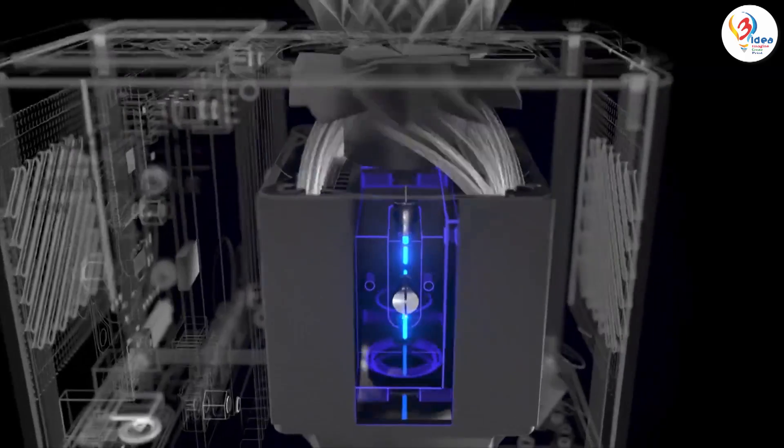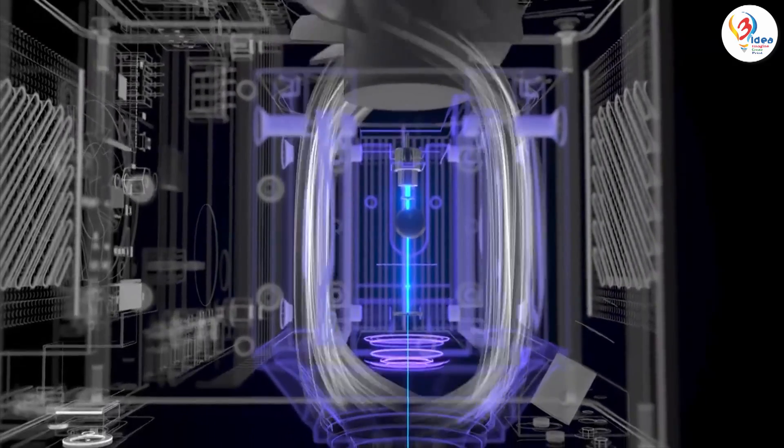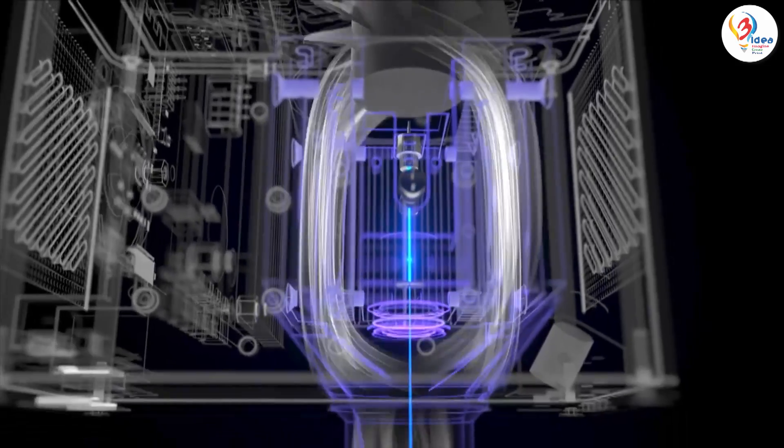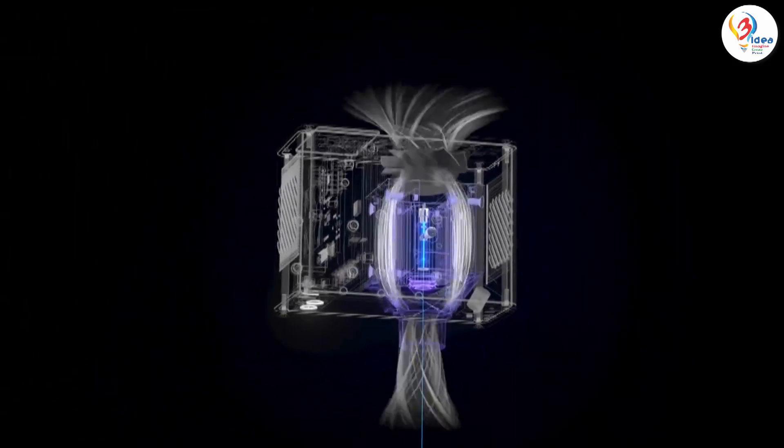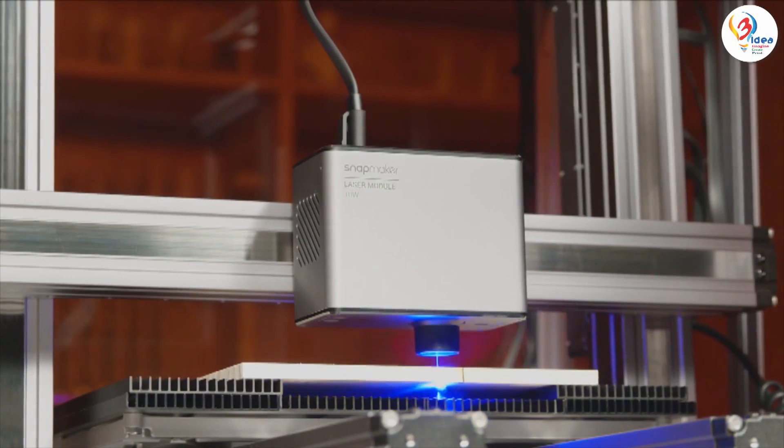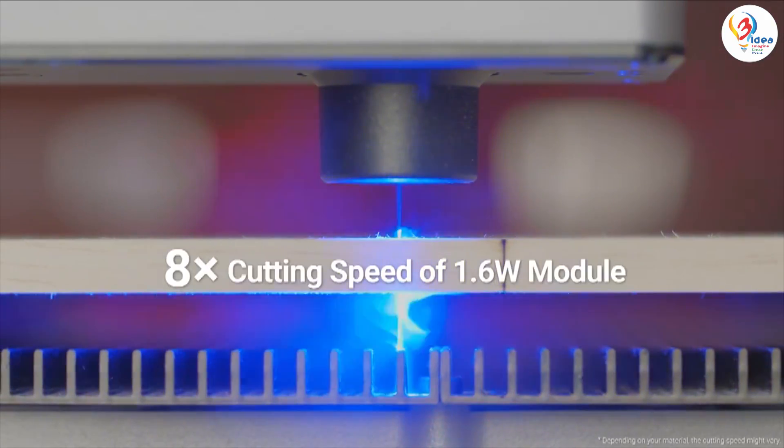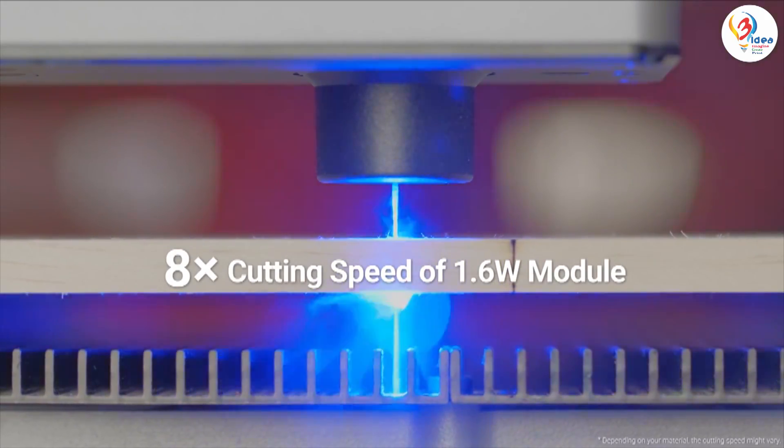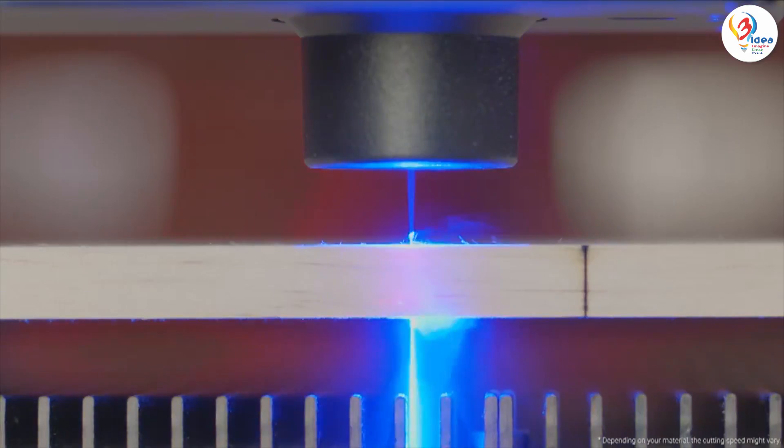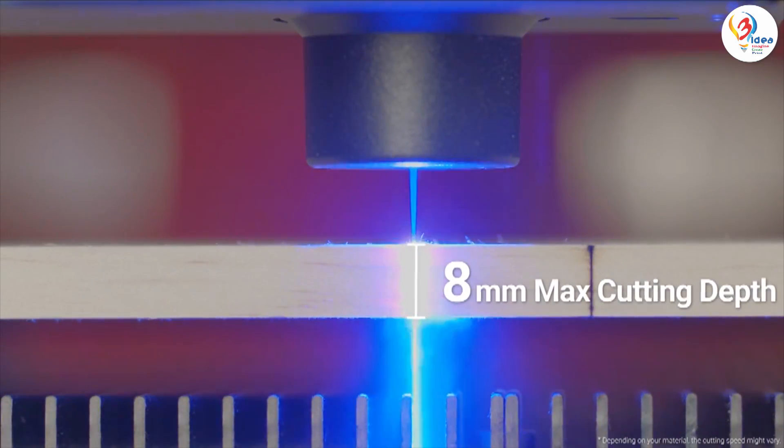For better cutting performance, the 10 Watt Laser Module comes with an optimized air-assist structure, minimizing fume and debris interference while you are laser cutting. Its cutting speed is up to 8 times that of the 1.6 Watt Laser Module, and the maximum cutting depth is 8 mm.